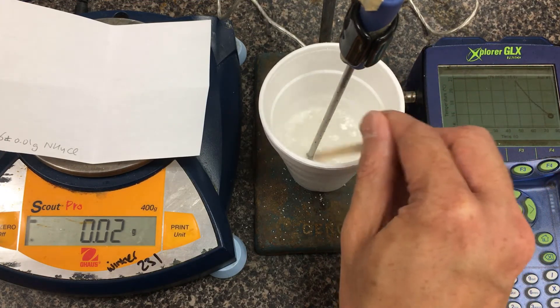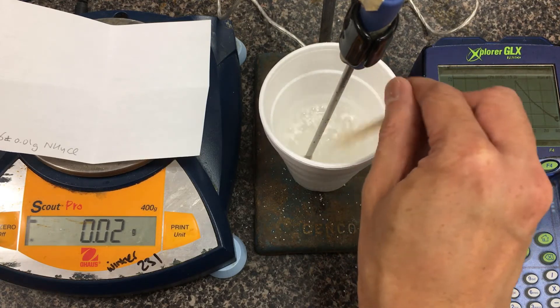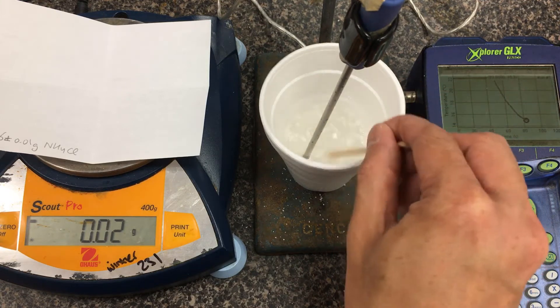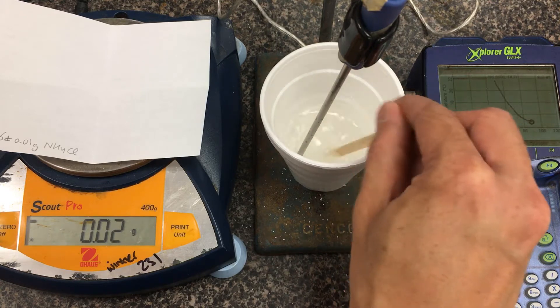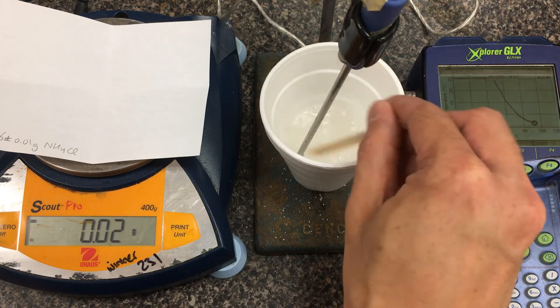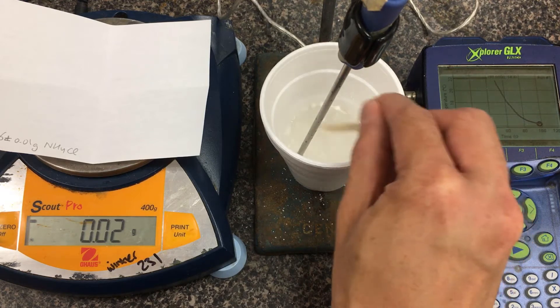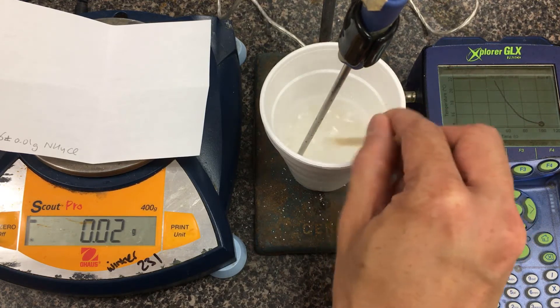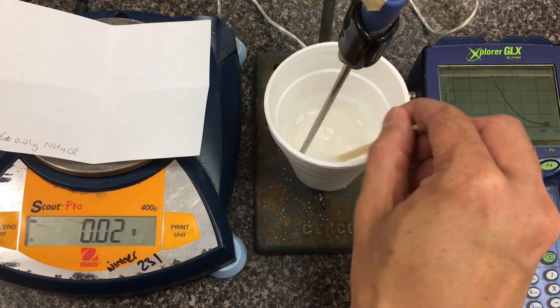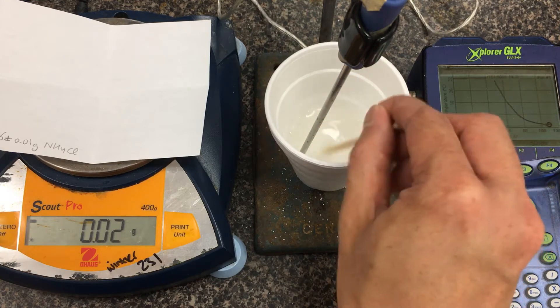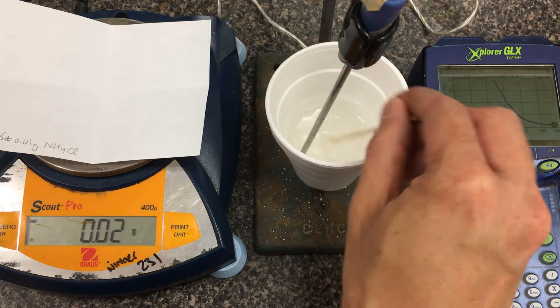You'll notice that the GLX probe is sensing a decrease in temperature. It's plotting our temperature in real time. Later on, we can export the graph. We see that the temperature actually cooled down, so this has been an endothermic reaction. Based on the graph, we're looking at about 14 degrees. I'm going to let this run for a little longer to get a sense of the linear trend as it tries to equilibrate back to room temperature, so we can do some extrapolating later.